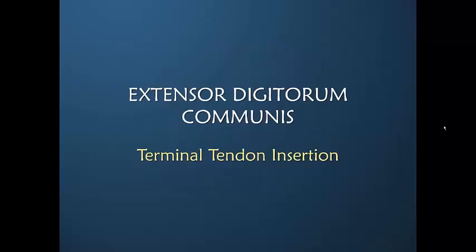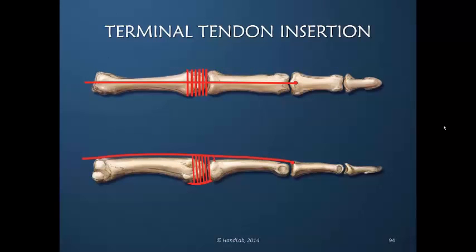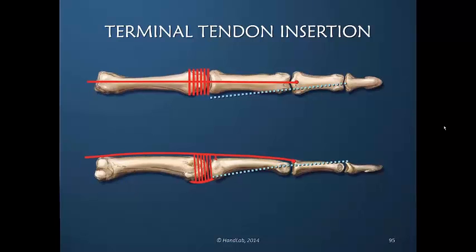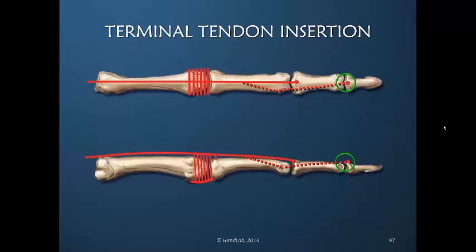The terminal tendon insertion we have already looked at. Here is a schematic drawing of the extensor digitorum communis and the sagittal bands. We often think that tension from the EDC is a primary force that extends a finger. But those lateral bands carry tension — it's that tension that goes to the terminal tendon insertion, with a contribution from the extensor digitorum communis. That's how the power is gathered distally.